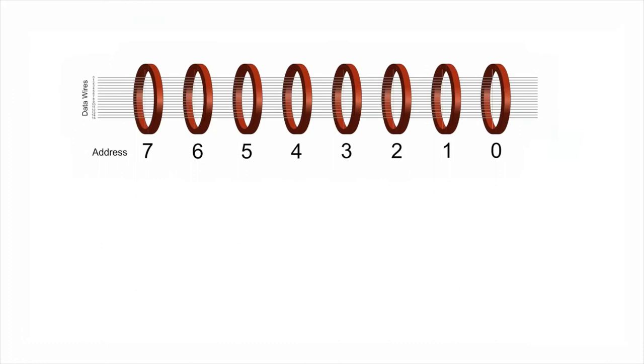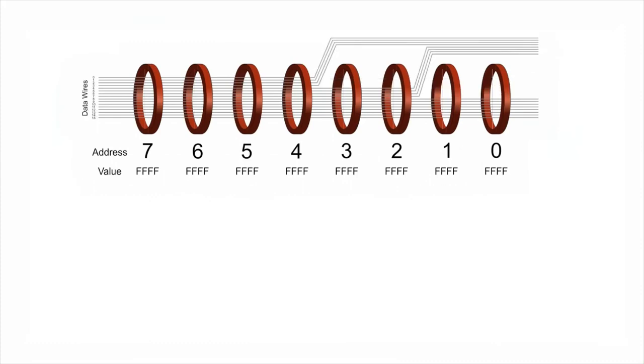If a wire goes through a core, it's a 1 at that location. So right now, we made a rope with all ones at all addresses, reading FFFF everywhere in hexadecimal. Now let's kick a few wires off the cores. When a wire goes around a core, it represents a 0.